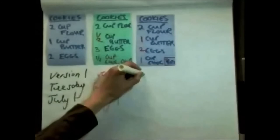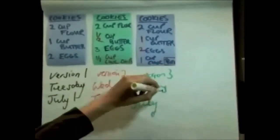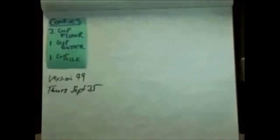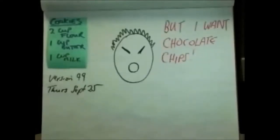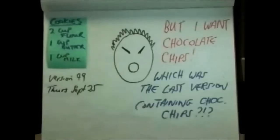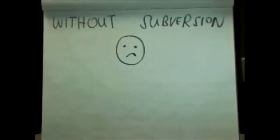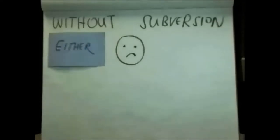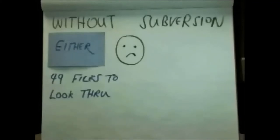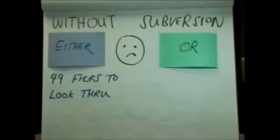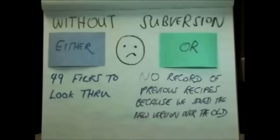Then on Wednesday, July the 9th, we change our cookie recipe — we change the amounts of flour, butter, and eggs, and we add some chocolate chips. A week later we change the recipe again, and so on. A few months later we have the 49th version of the recipe, and this one has lost the chocolate chips. But our favourite niece is visiting and she loves chocolate chips. How can we find the last version of the recipe that called for chocolate chips? If we haven't been using Subversion, finding our chocolate chip recipe could be a real ordeal — either we have 49 separate versions to look through, or we have no idea what previous recipes said because each time we simply saved the new version over the old.